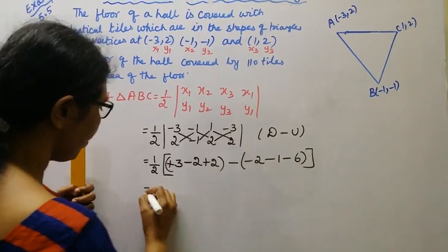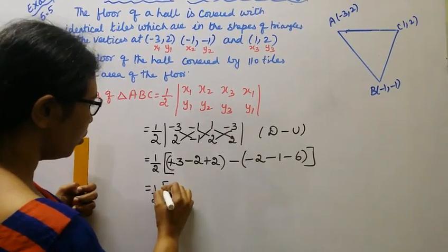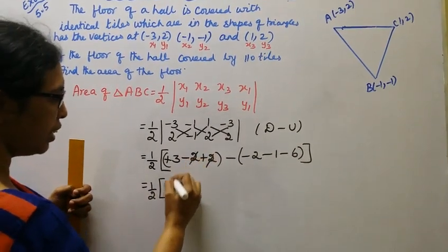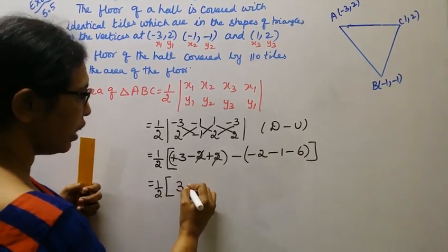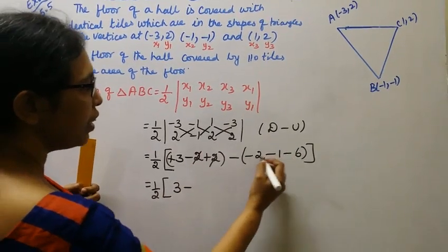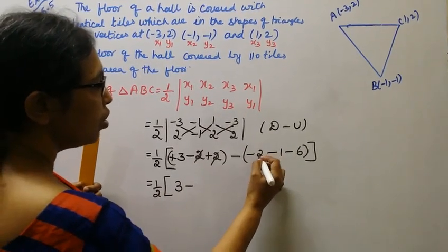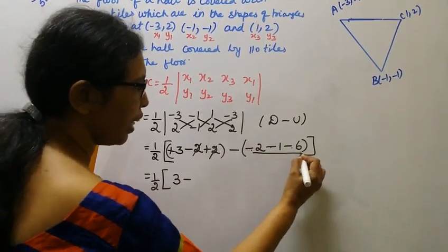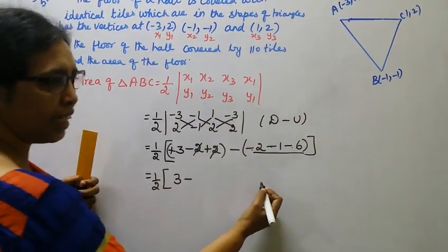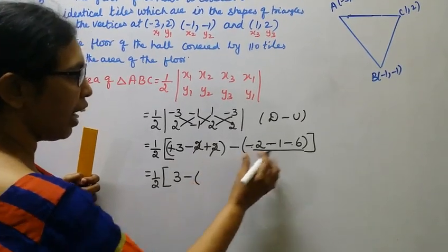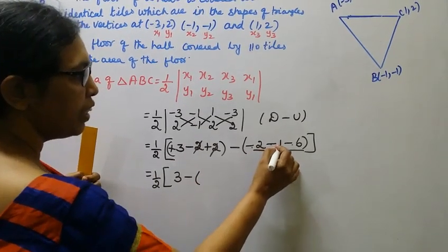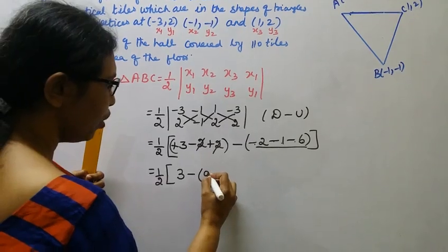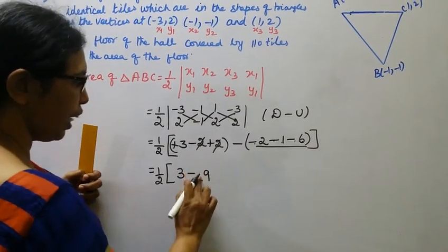1 by 2. Minus 2 plus 2, cancel it. 3 is equal to minus. It is 2. Minus, minus, minus. 2 plus 1 is 3. 6 plus 1 is 9. So it is 9.